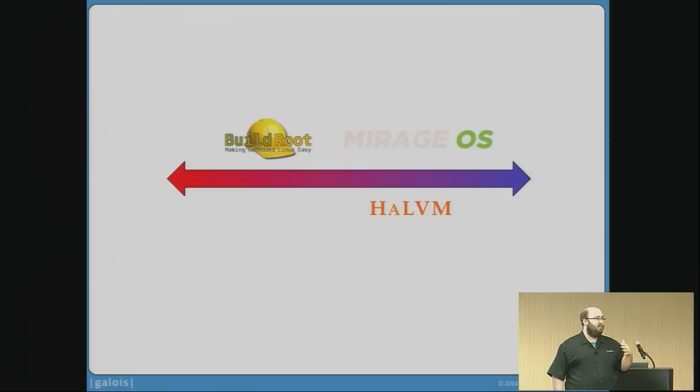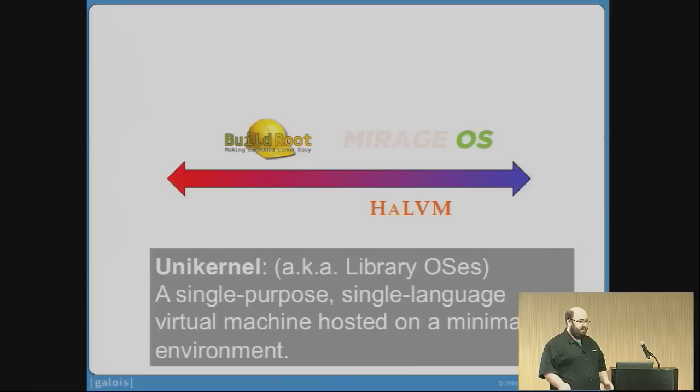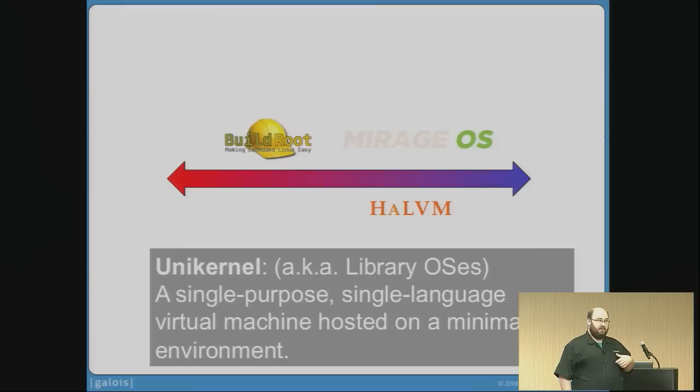So what are unikernels? Unikernels — I'm thanking Neil for the term — are also known as library operating systems. They're single-purpose VMs, usually written in a single language. Initially they were mostly high-level languages, but you can get them in C and other things now too. These are virtual machines that run one program that is directly compiled to run on Xen. There's no Linux, there's no all the libraries that you're used to. It's just that one application running on Xen.